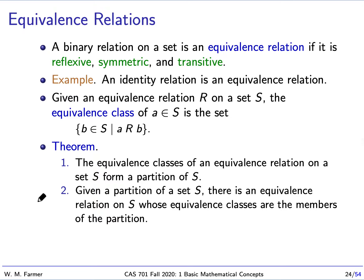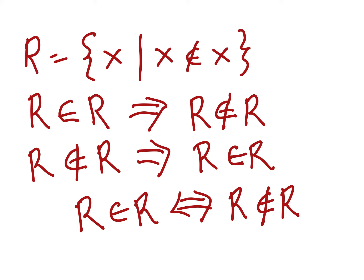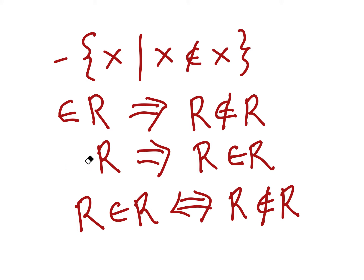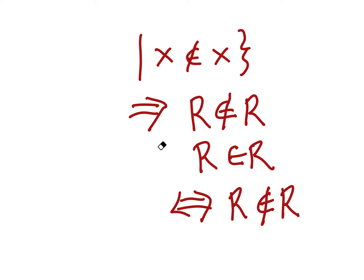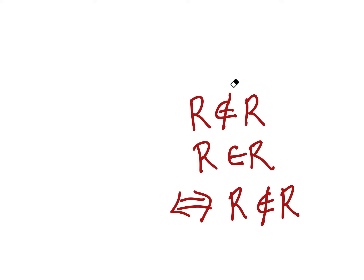There is a very important kind of relation called an equivalence relation. An equivalence relation is a binary relation that is reflexive, symmetric, and transitive. Let's define these formally. We have E, a relation on A cross A, and we say E is an equivalence relation if it satisfies all three properties.